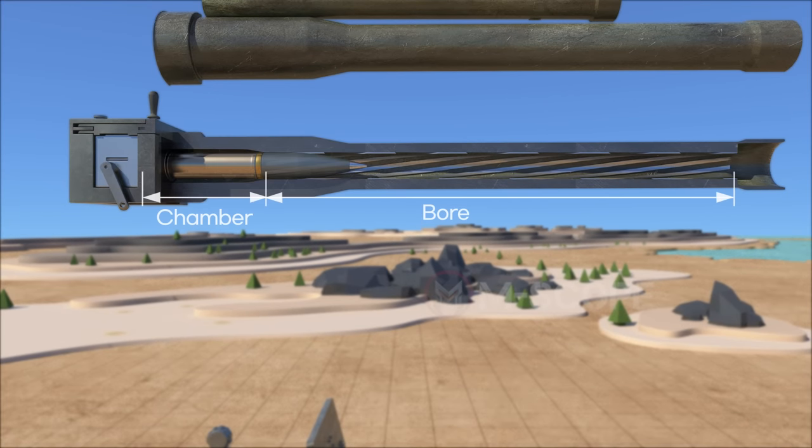The cannon tube consists of a powder chamber in which shells are loaded and a bore which bears rifling. A rifling starts from the end of the powder chamber to the far opposite end of the barrel.